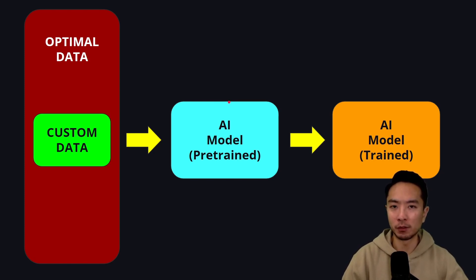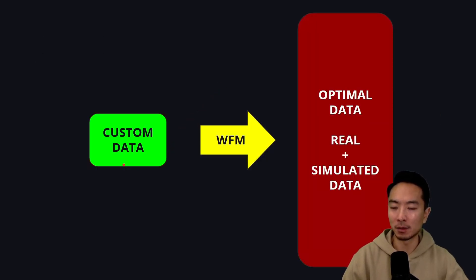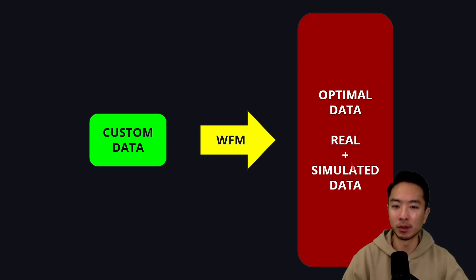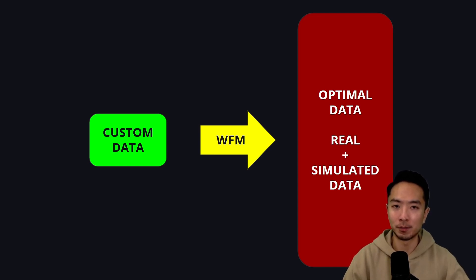With the Cosmos World Foundation Model, what they're trying to do is bridge this gap. They do this by taking some custom data and feeding it into the World Foundation Model, which helps add to our optimal data set. The World Foundation Model gives us a bunch of simulated data that looks very close to real-world data, helping further train the model. You can then deploy that model in the real world, and it should ideally perform in all the corner cases you want it to handle.